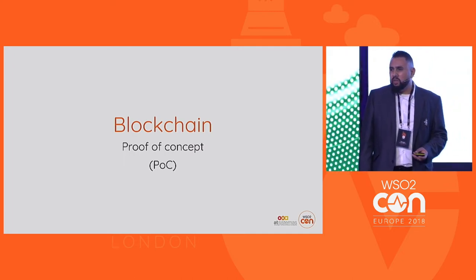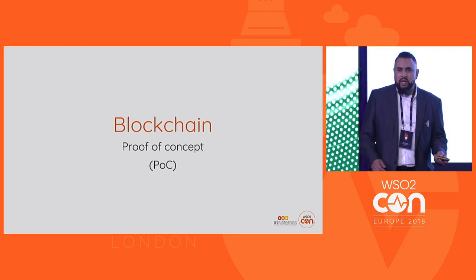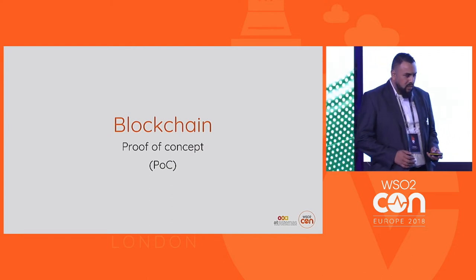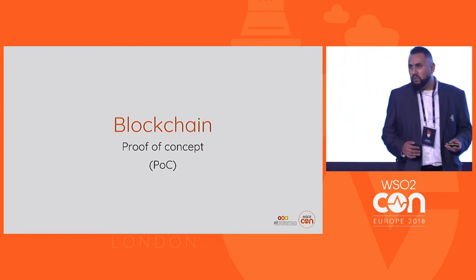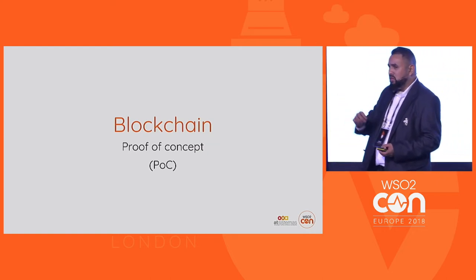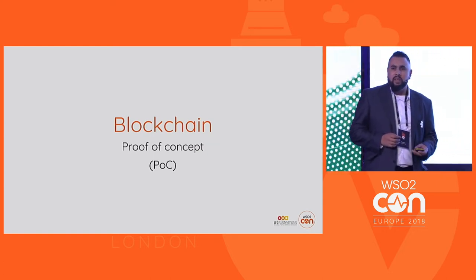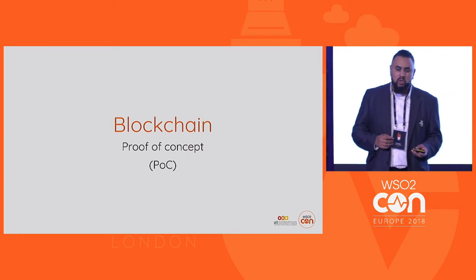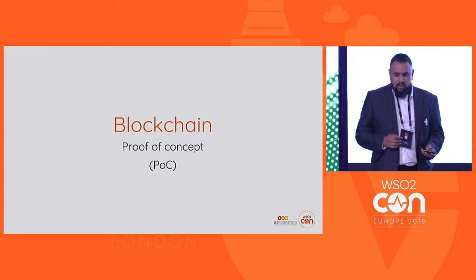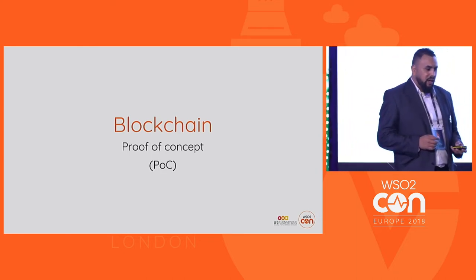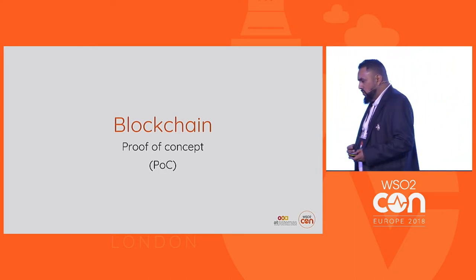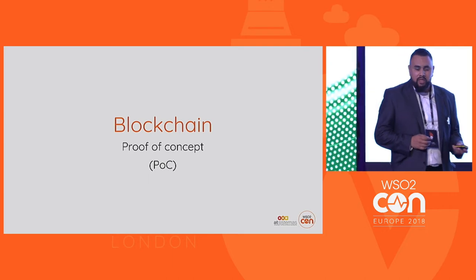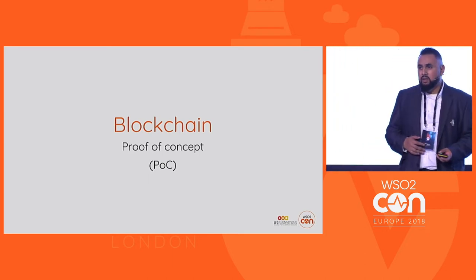This proof of concept is focused on trying to bring transparency in the process of building and consuming APIs. You might find this proof of concept interesting because of two reasons. The first one is that it implements some of the WSO2 modules and also integrates blockchain technology components. The second one is that perhaps some of you come from a company with a similar profile like mine, and perhaps you have been facing the same challenges.